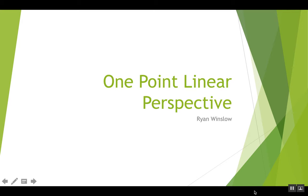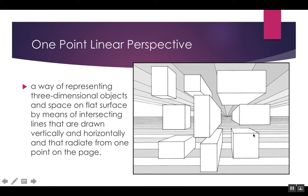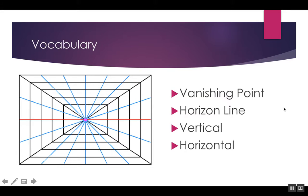One-point linear perspective is a way of representing three-dimensional objects and space on a flat surface by means of intersecting lines drawn vertically and horizontally that radiate from one point on the page. That means you're drawing things that look 3D and popping out on the page, even though you're working on a flat surface. The vocabulary terms we're going to be talking about are: vanishing point, horizon line, vertical, and horizontal.